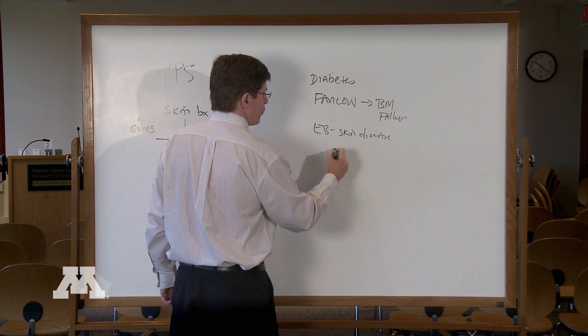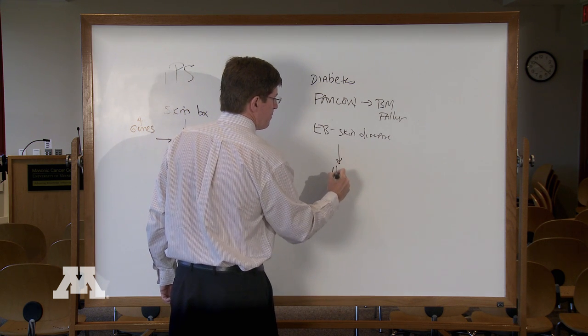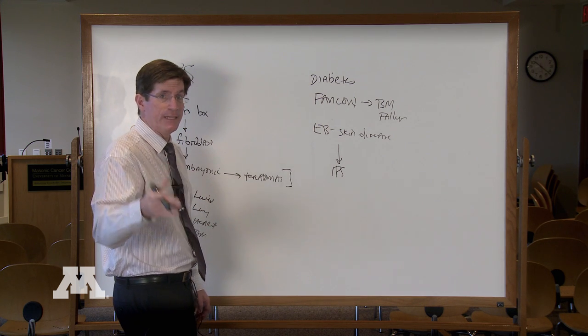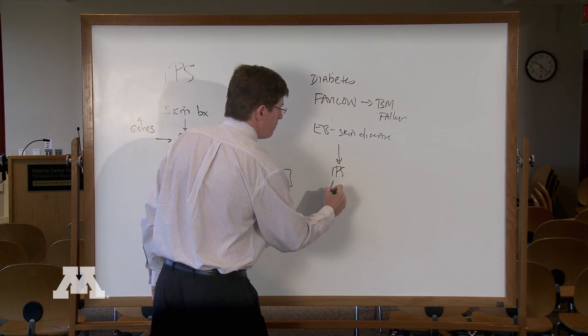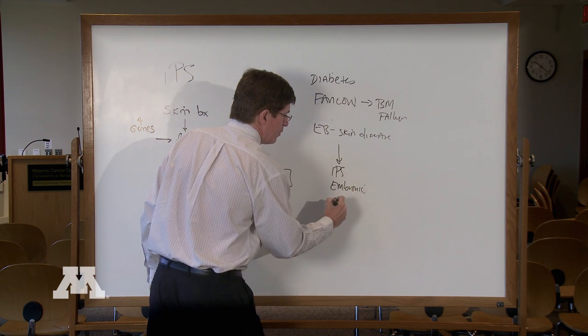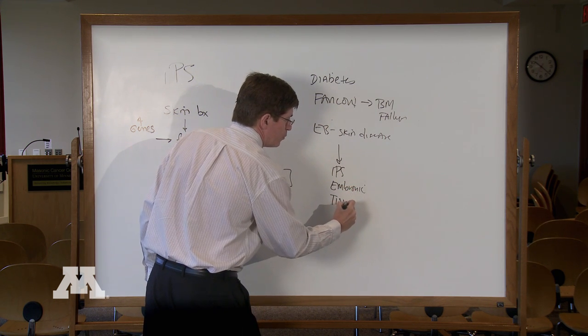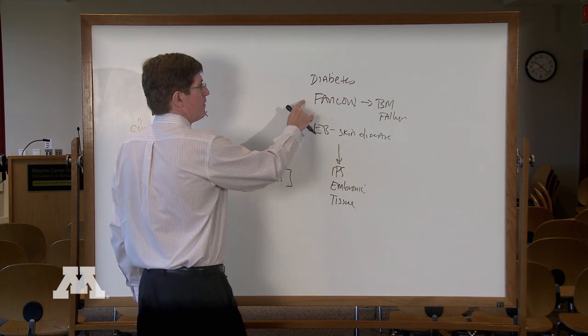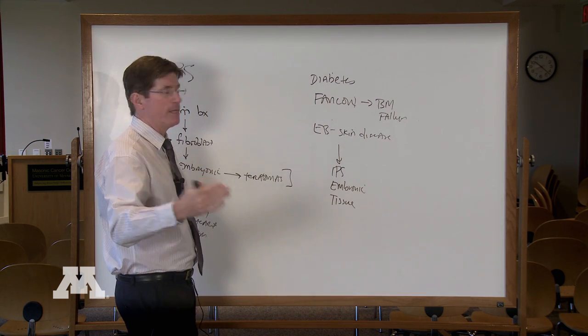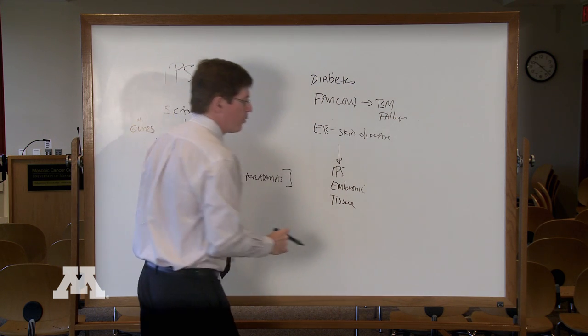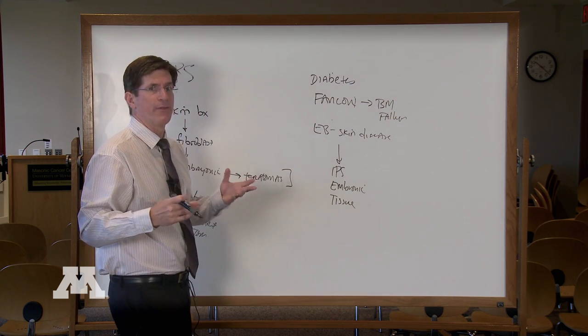What I can do is I can make the iPS cells from a skin biopsy derived from any individual patient, make them into an embryonic-like cell, in turn, then make the tissue that you want. So for diabetes, you'd make islet cells. For Fanconi anemia, you would make bone marrow cells. For EB, you make skin cells. And I genetically correct them so they no longer create the disease.